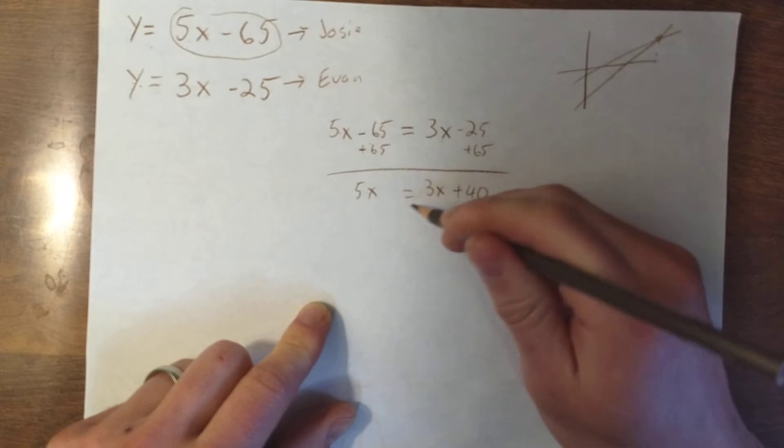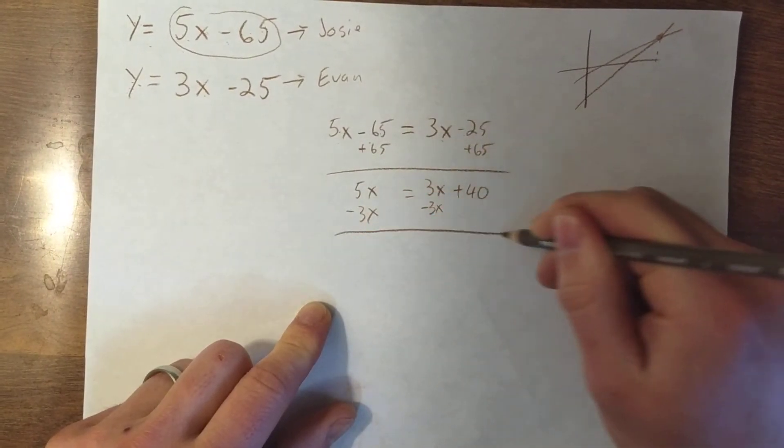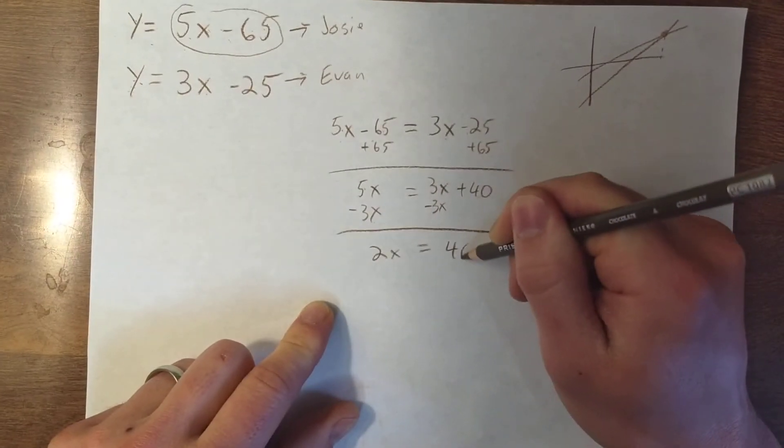All right, now I need to get the x to the other side, so minus 3x minus 3x. 5x minus 3x is 2x. 2x equals 40.